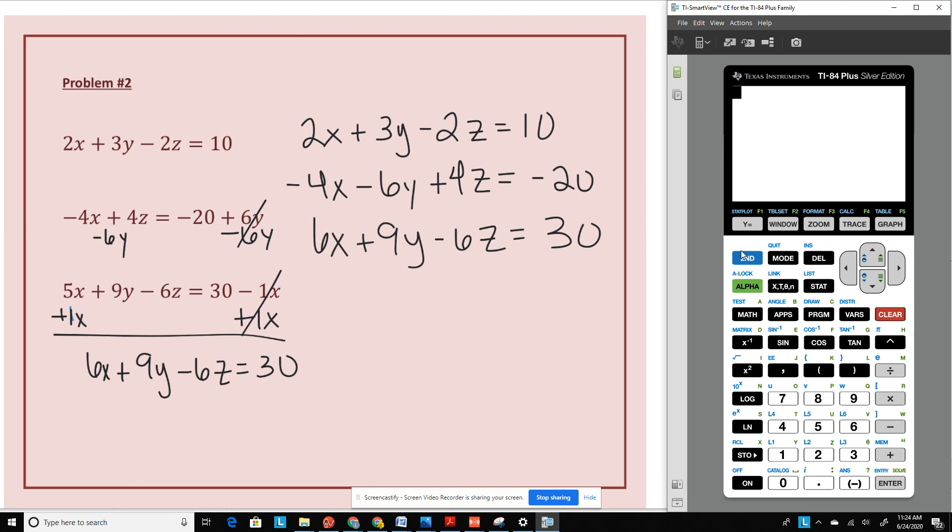So I'm going to go and input this into my matrix. So second matrix, I'm going to go to edit. You can select any one. I'm going to go ahead and select C. And I'm creating a 3 by 4.